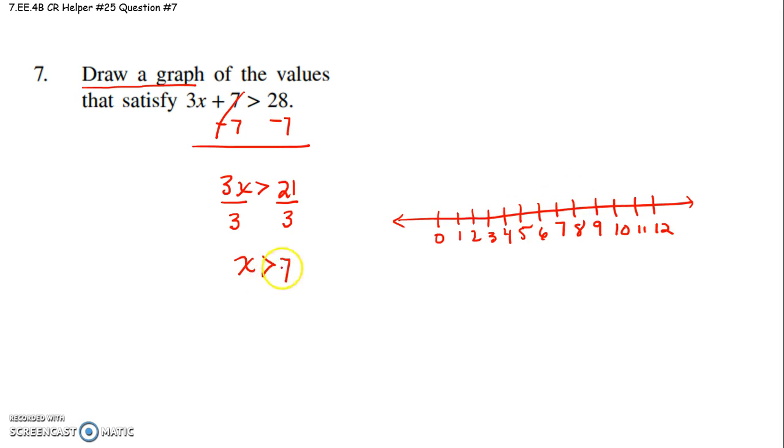So because there is no line under this, because x is greater than 7, is why we put an open circle at the 7, or I always draw mine above the 7. We want to show we're not including the 7.